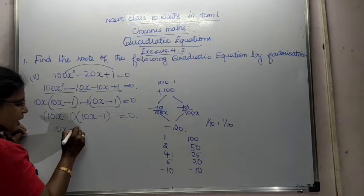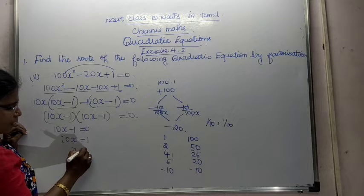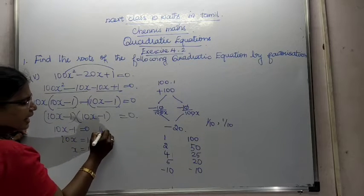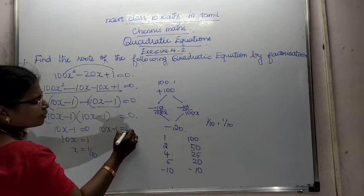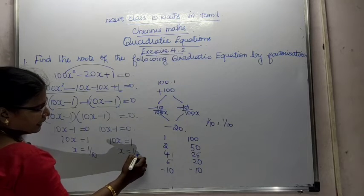Then 10x minus 1 is equal to 0. That implies 10x is equal to 1, x is equal to 1 by 10. Again, we can write here as 10x minus 1 is equal to 0. 10x is equal to 1, x is equal to 1 by 10.